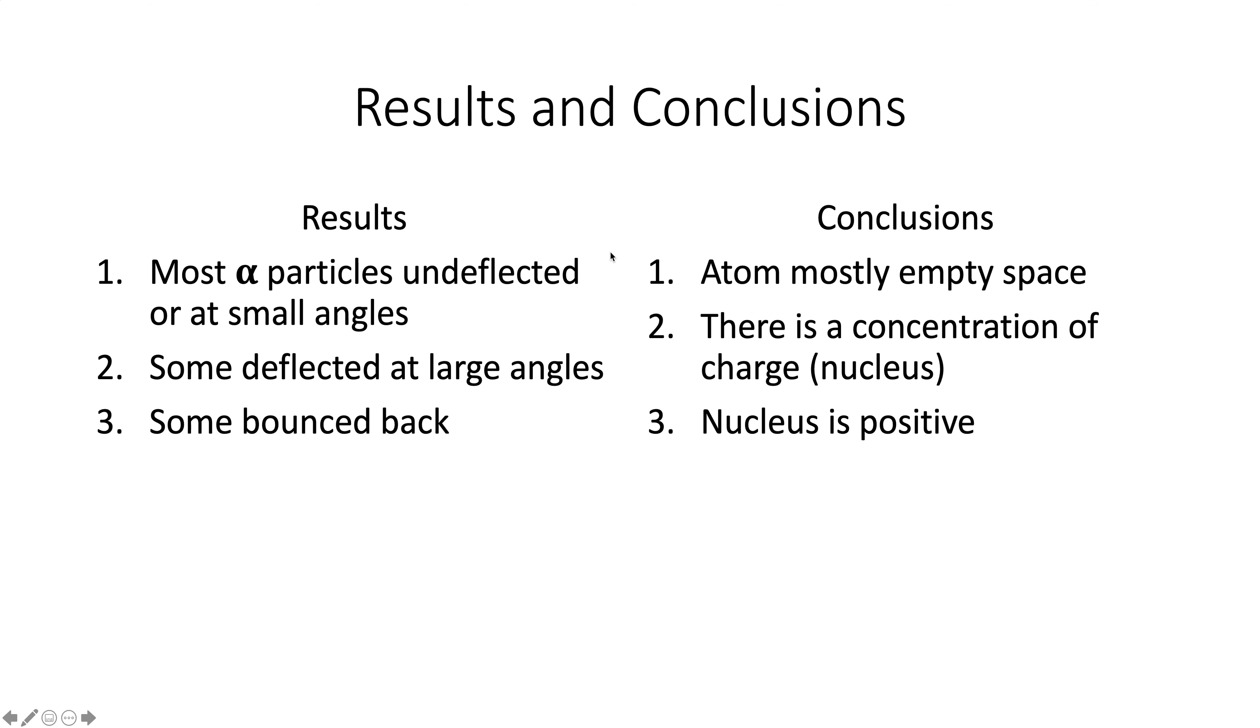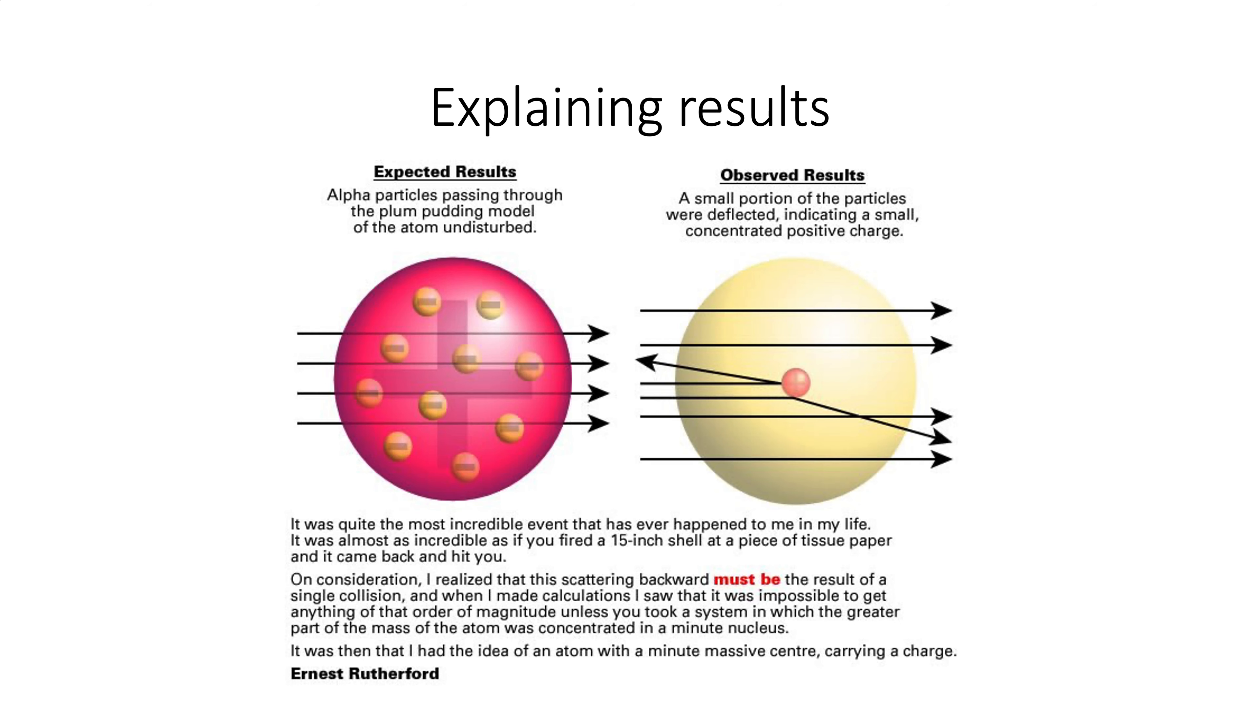And remember, gold is a solid. That means the atoms themselves are very close together. So this is the expected results. This is what actually happened, and this is Rutherford's words down here, right? You expect most of them to go through, but what happened? This is most of them not even coming close, right? This is the sum of them coming close to the nucleus, being pushed away, and this is the ones that hit, but most of them very far away.